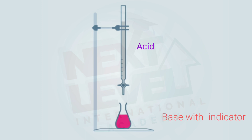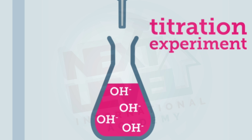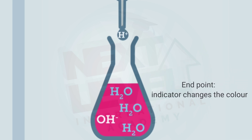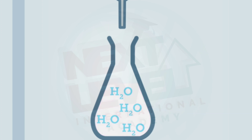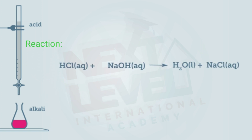Acid goes to the burette and base with indicator goes to the titration flask. The purpose of the indicator is to tell us when the chemical reaction between acid and base is complete, by changing its color. We open the burette and acid comes down — H⁺ ions react with OH⁻ ions to neutralize each other. When all ions are neutralized, the indicator changes color, marking the endpoint of the reaction. We need the balanced chemical reaction between the two compounds.